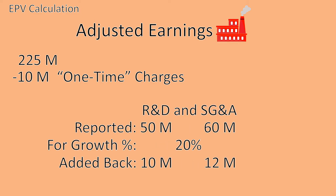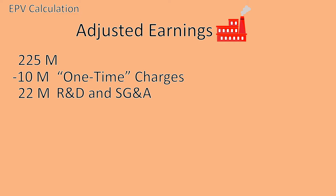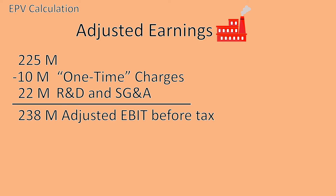Some R&D and SG&A expenses might have been used to fuel the growth of the company. We can add those portions of the mentioned expenses back to our operating income, due to us assuming that there will be no future growth. Later in the video, we will discuss the technique to calculate those portions in a more quantitative way, where we will have a look at the maintenance capex. But right now, we presume that we have a good judgment of the company's and industry's need to grow, and therefore add back 20% of R&D and SG&A respectively. Now we can calculate the adjusted EBIT before tax. For this, we subtract the average one-time charges and add back the calculated portions of R&D and SG&A that are needed to support growth. If we do this, we arrive at 237 million.